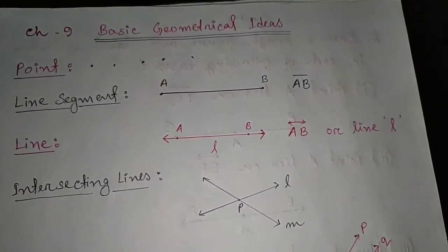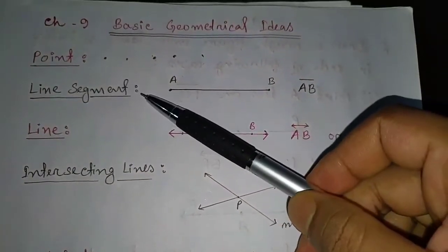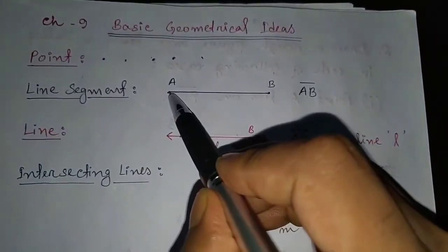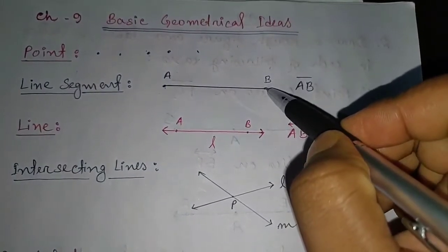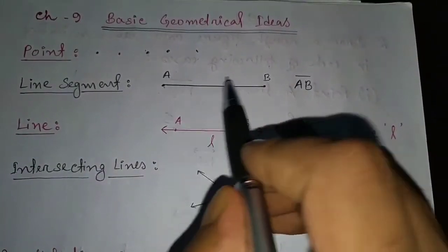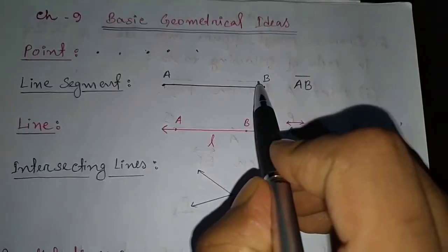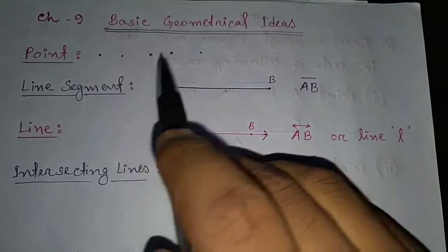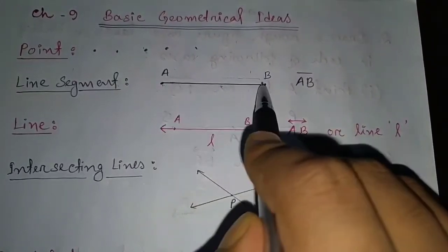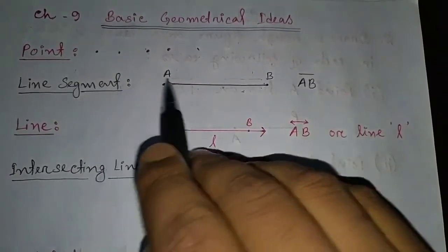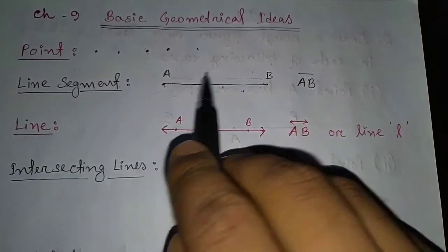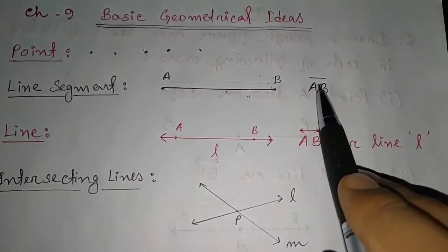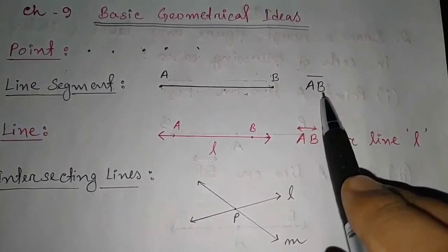Next is line segment. Suppose there are two points — point A and point B. If you connect point A to point B, there is a line, and this line is known as a line segment. When there are two points and you connect them by a line, this is a line segment. It is represented as AB with a bar above it — that is the symbol of a line segment.